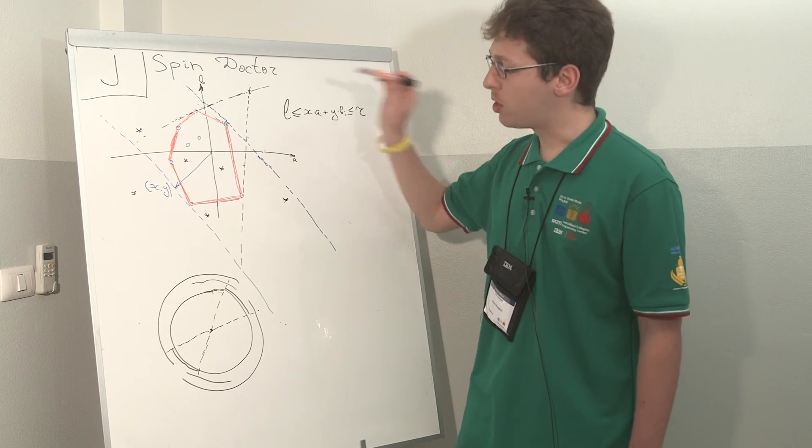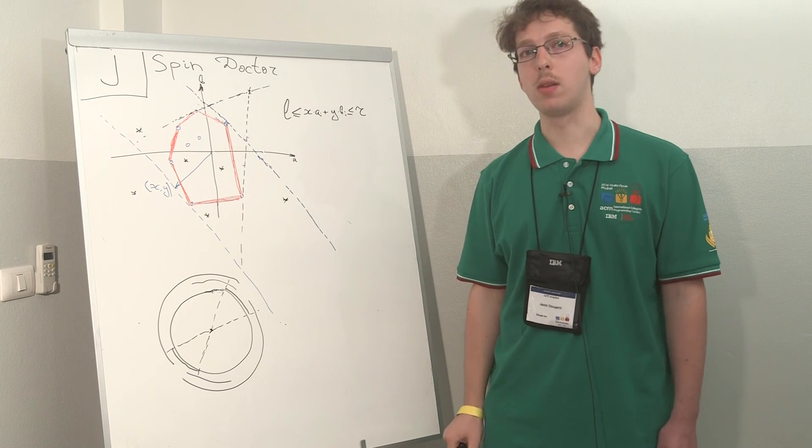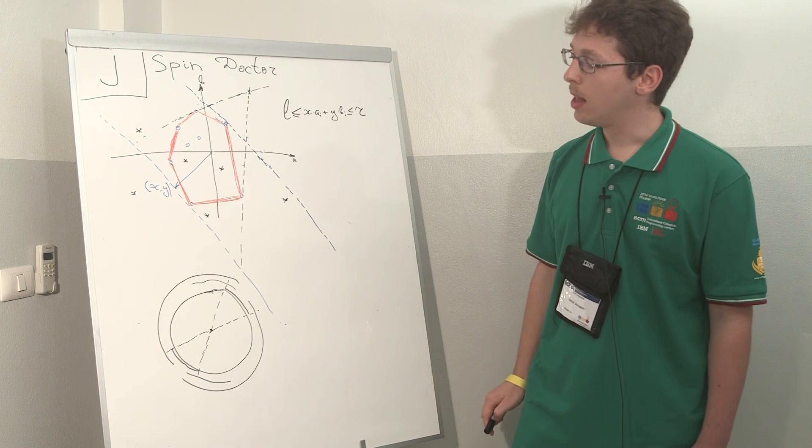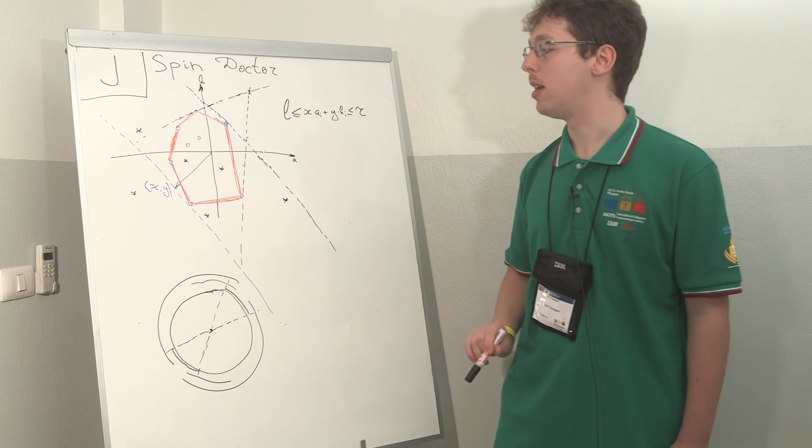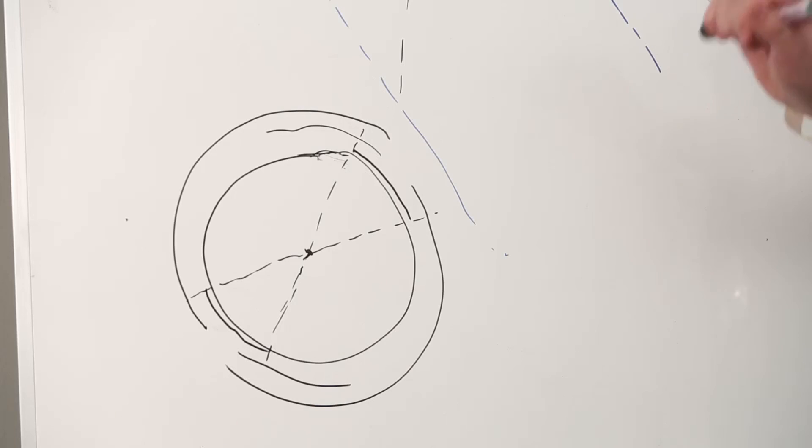Now this reduces the problem to a very common one. You are given a circle and some segments on the circle which correspond to those angles. You need to find a point on the circle which is covered by the least number of segments. This is a standard problem which can be done by sorting, opening and closing boundaries of each segment.